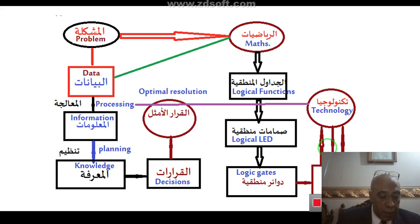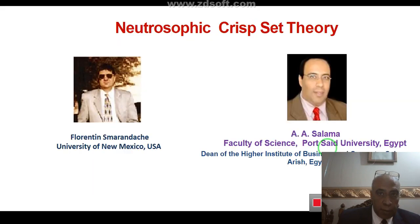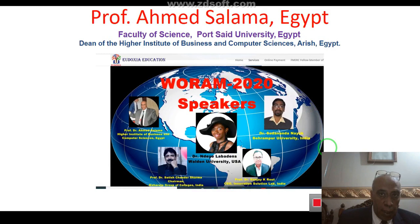Indeterminacy is different from randomness. Indeterminacy can be caused by physical space, material, and types of construction. Indeterminacy can also be caused by items involved in the space or by other factors.